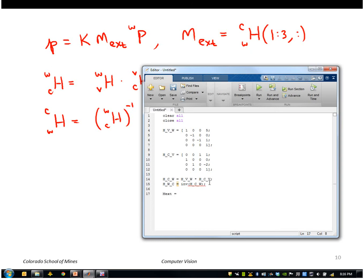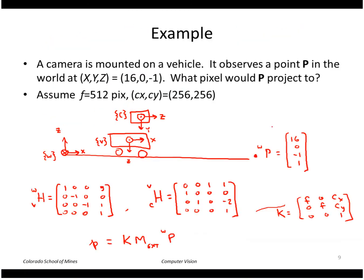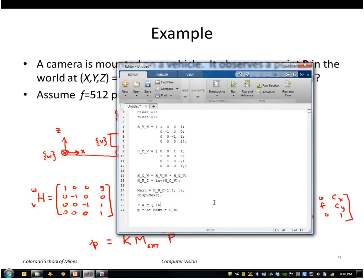Now I can do the first three rows of that matrix. I'll just display that just to show what that looks like. And then we can just go ahead and do the projection. So that is K times M_ext times P world. And what is P world? I should have defined that. If I go back to this page, it's 16, 0, minus 1. And then one in the last row.